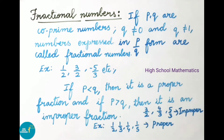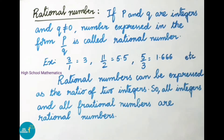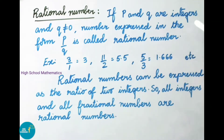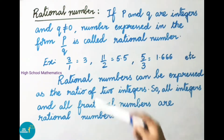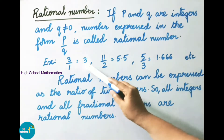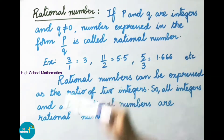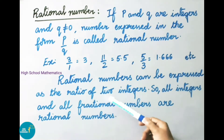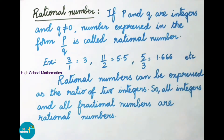Next, we shall see the definition for rational numbers. If P and Q are integers and Q is not equal to 0, then the number expressed in the form P by Q is called a rational number. Example: 3/1 equals 3; 11/2 equals 5.5; 5/3 equals 1.666, etc. Rational numbers can be expressed as the ratio of two integers, so all integers and all fractional numbers are called as rational numbers.